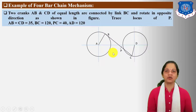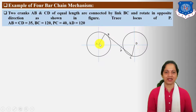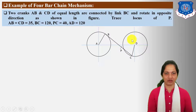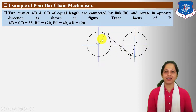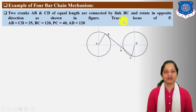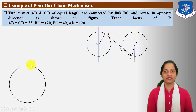This is known as a four-bar chain mechanism. The first bar is AD which is fixed, second is AB which is revolving, third is CD which is also revolving, and the fourth bar is BC which connects the two cranks AB and CD. Next, let us solve this mechanism with dimensions. First, draw a circle for point B.